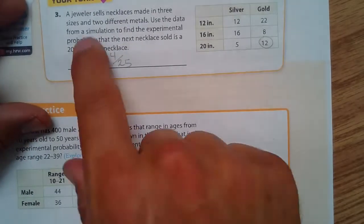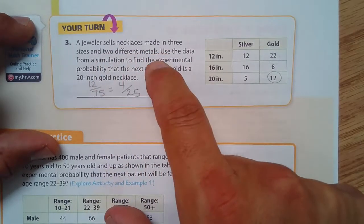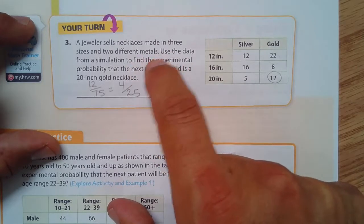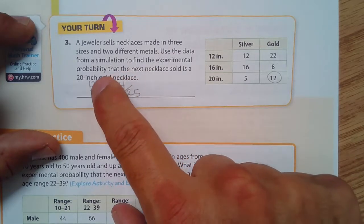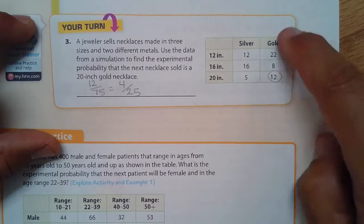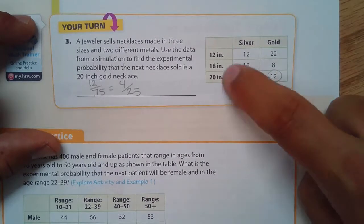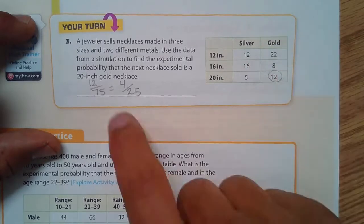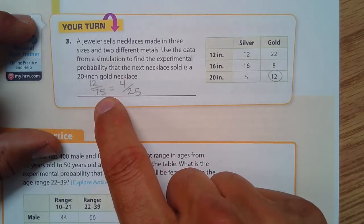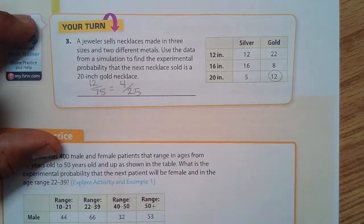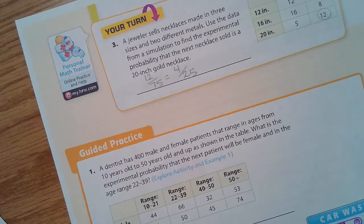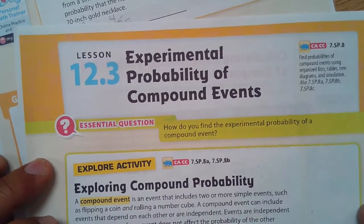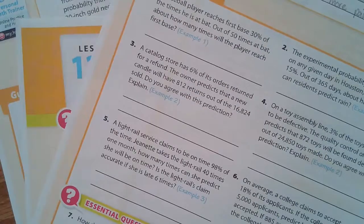Your turn: a jeweler sells necklaces made in three sizes and two different metals. Use the data from a simulation to find the experimental probability that the next necklace sold is a 20-inch gold necklace. There were 12 of those. Adding up all the numbers gives a total of 75. So that's 12 out of 75, and dividing each by 3 gives 4 out of 25, which is our answer. That's what you need to know about experimental probability of compound events. Thank you for watching.